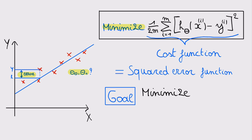This term is called the cost function for linear regression with one variable and is denoted as J. This specific cost function is also called the squared error function. Even though there are different cost functions we can use, the squared error function is the most commonly used. Our goal is to find the best values for theta 0 and theta 1 by minimizing this cost function, which depends on theta 0 and theta 1.